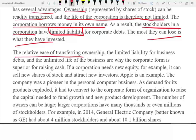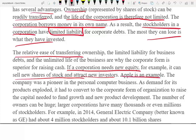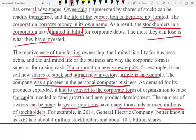Ownership is easy to transfer — if you own stocks, you can easily sell them, give them to your kids, or inherit them. If the corporation needs new equity, it can sell new shares to attract new investors. Apple is an example: as demand for its products exploded, it converted to the corporate form to raise more money. Large corporations can have millions of stockholders — for example, GE had four million stockholders and about 10.1 billion shares. The more shares you have relative to others, the more power you have in a corporation.